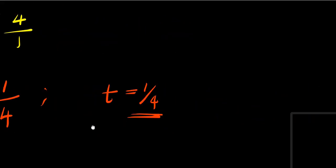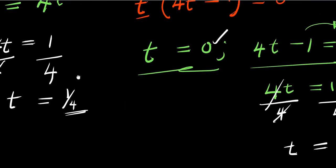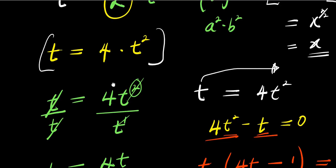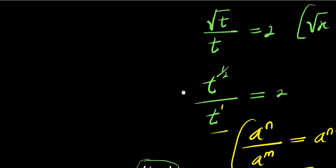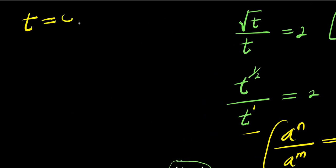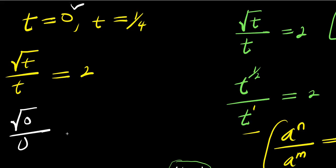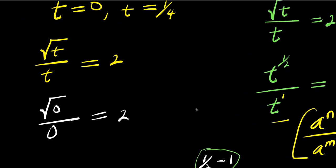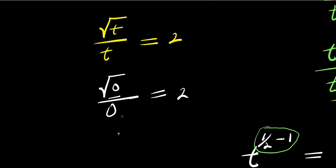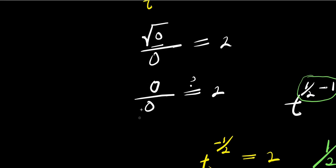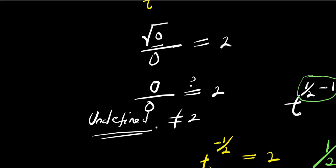In the second method we have 1 solution; in the first method we have 2 solutions — 0 and 1 over 4. The next step is to check by inserting each value back into the equation. Starting with 0: square root of 0 divided by 0 equals 2? Square root of 0 is 0, and 0 divided by 0 is undefined. So this cannot equal 2 — we eliminate t equals 0.